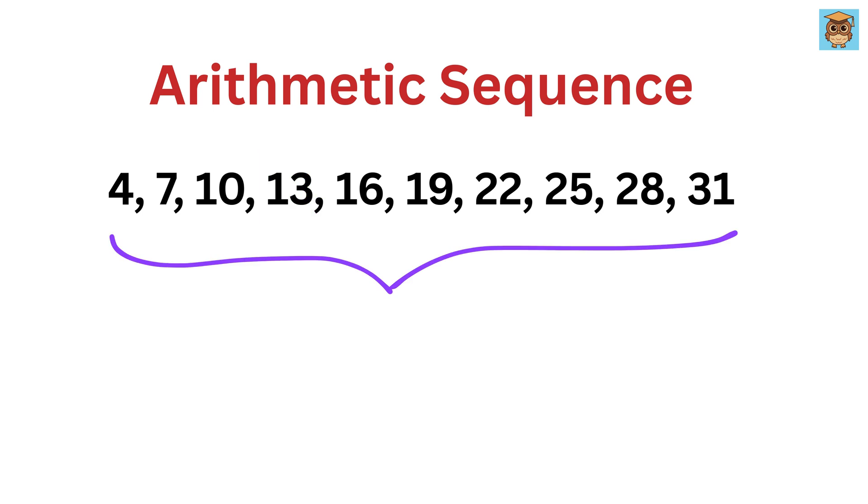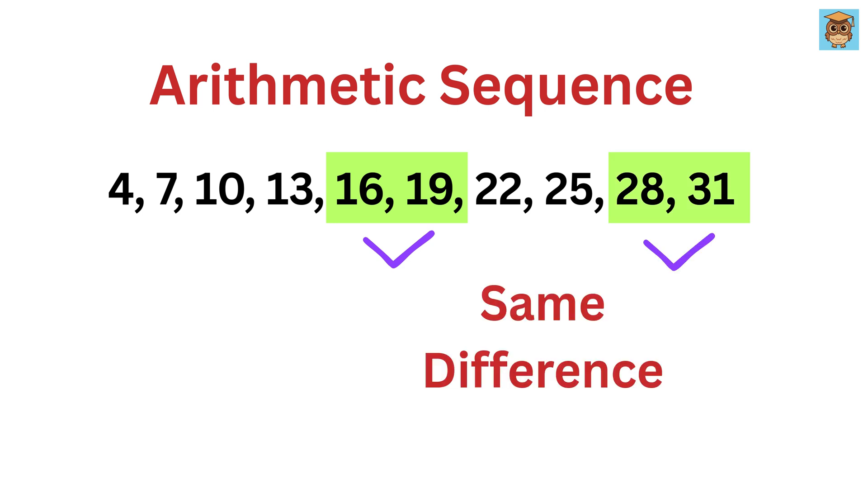Now an arithmetic sequence is a list of terms where the difference between each consecutive term or each consecutive number remains the same, and this difference is called the common difference.